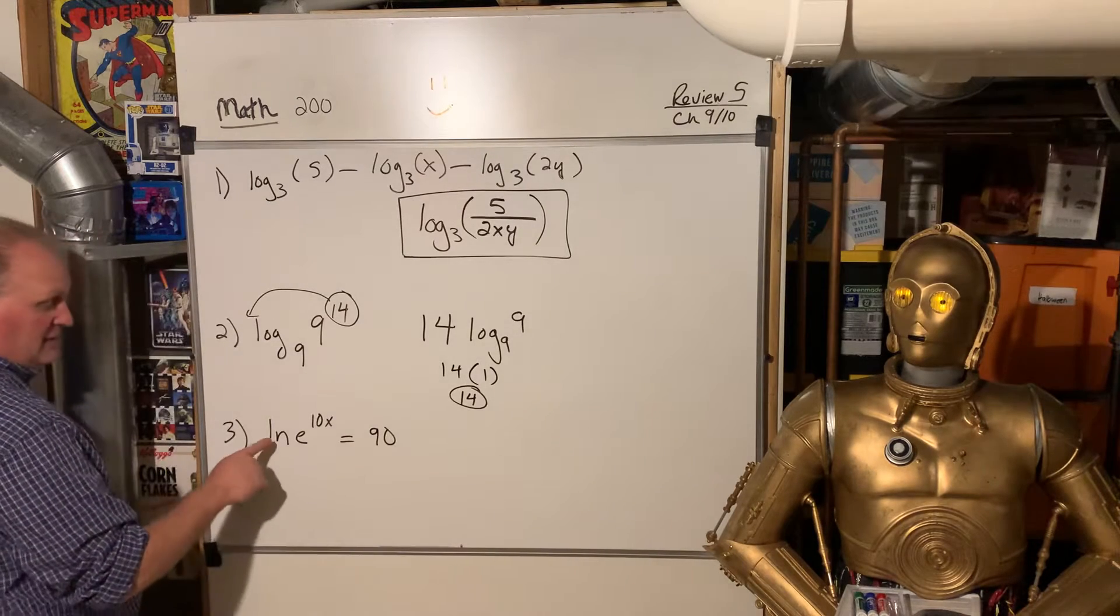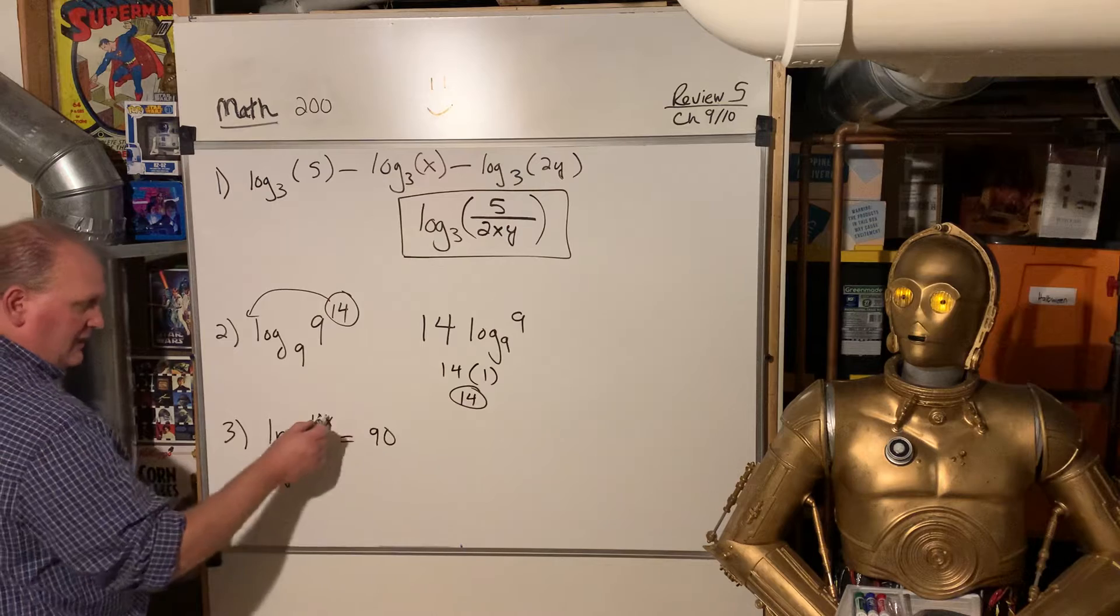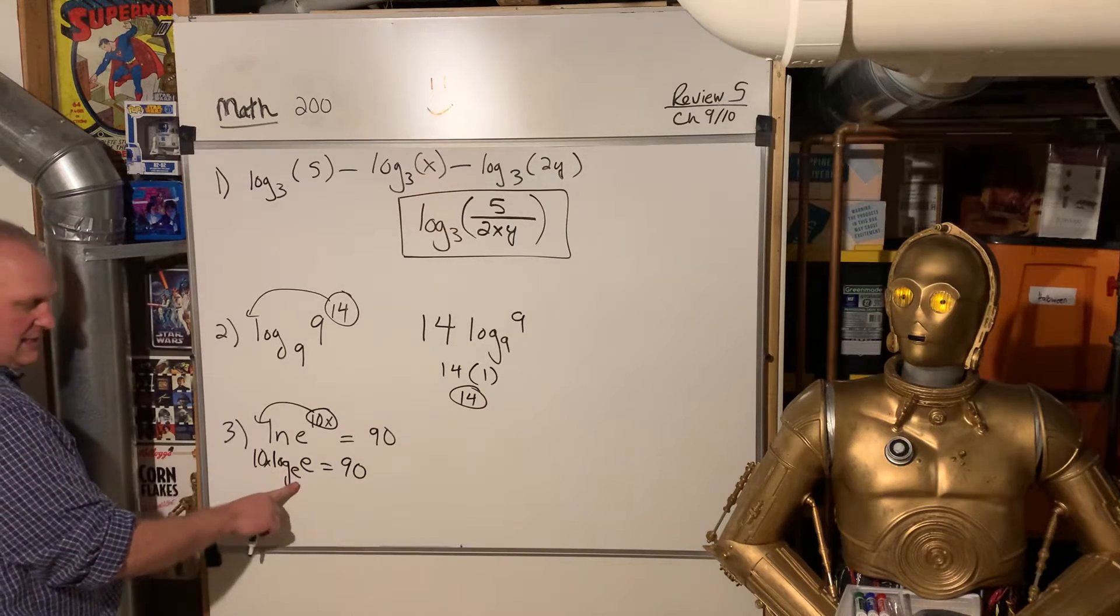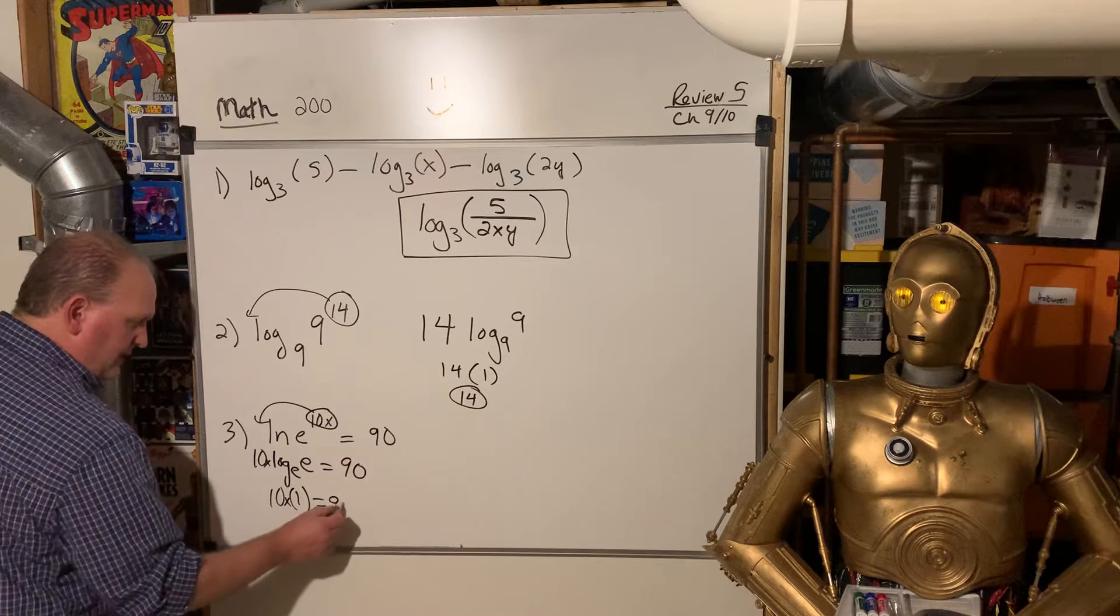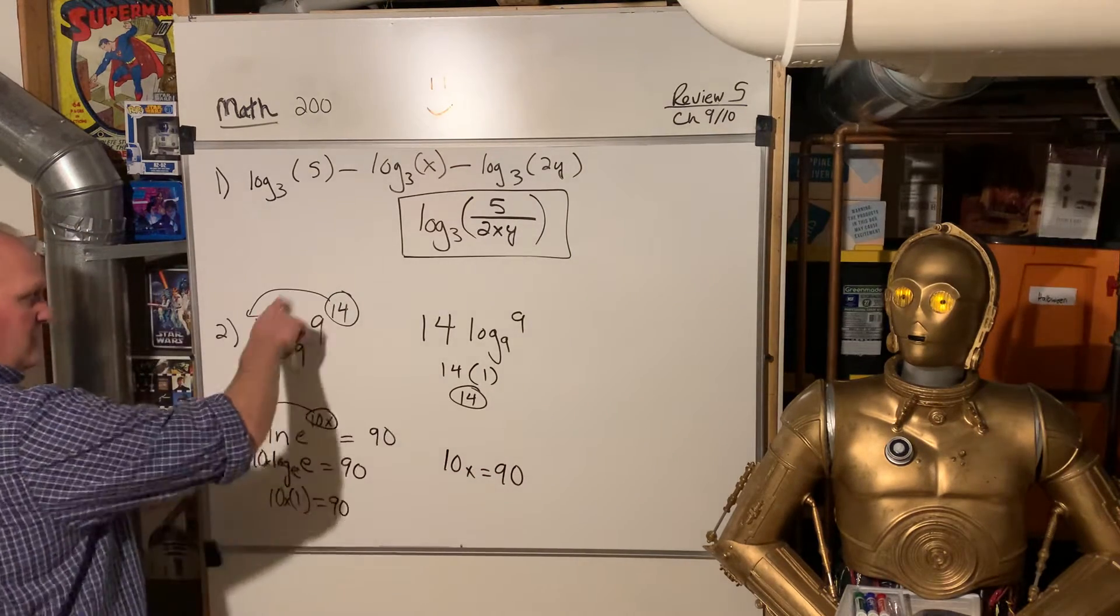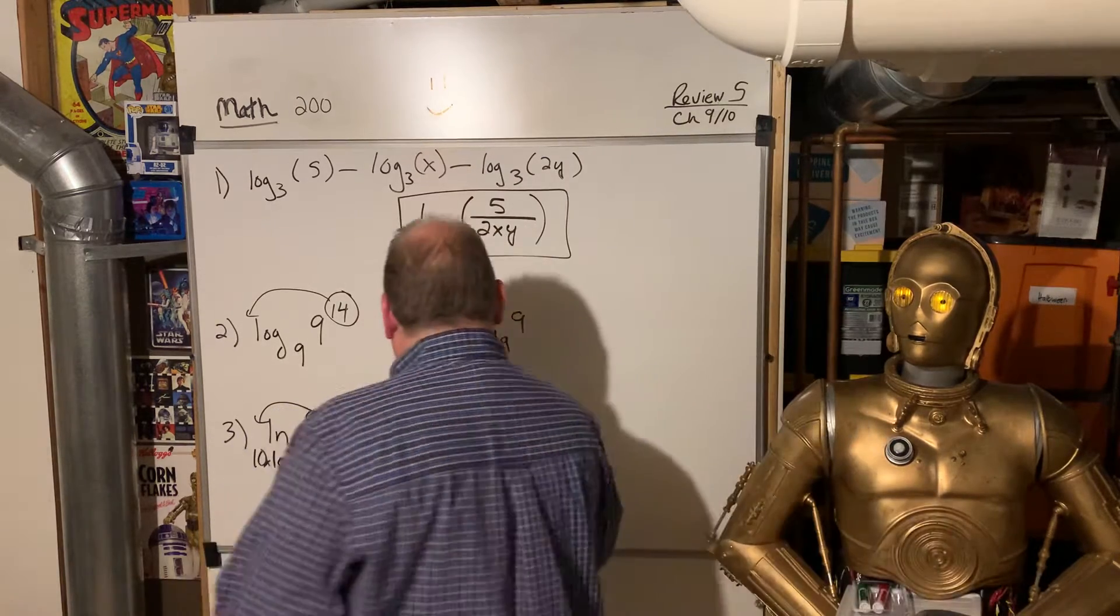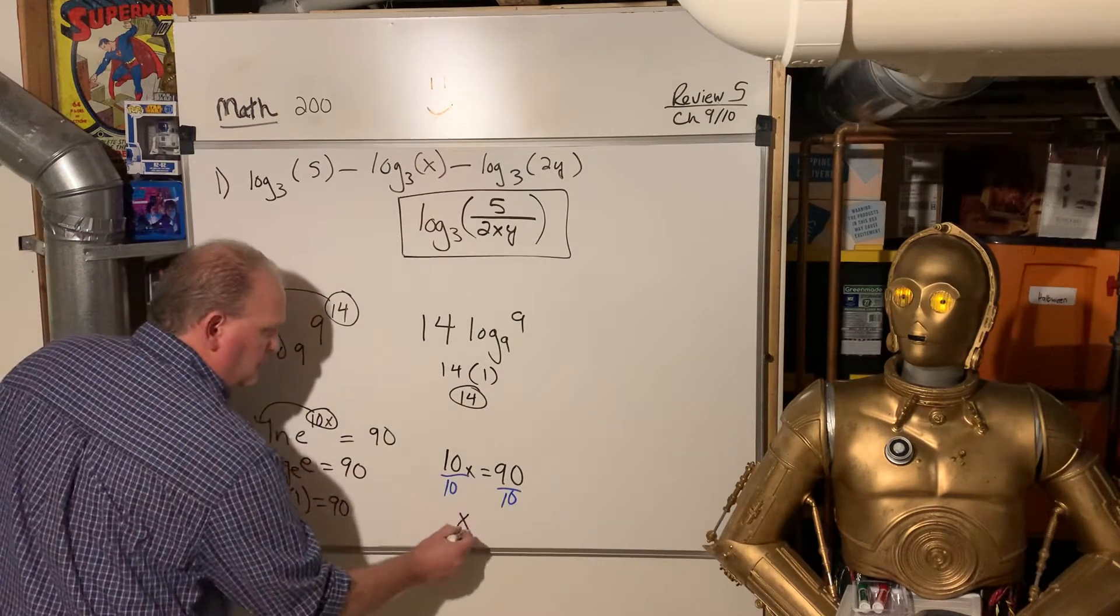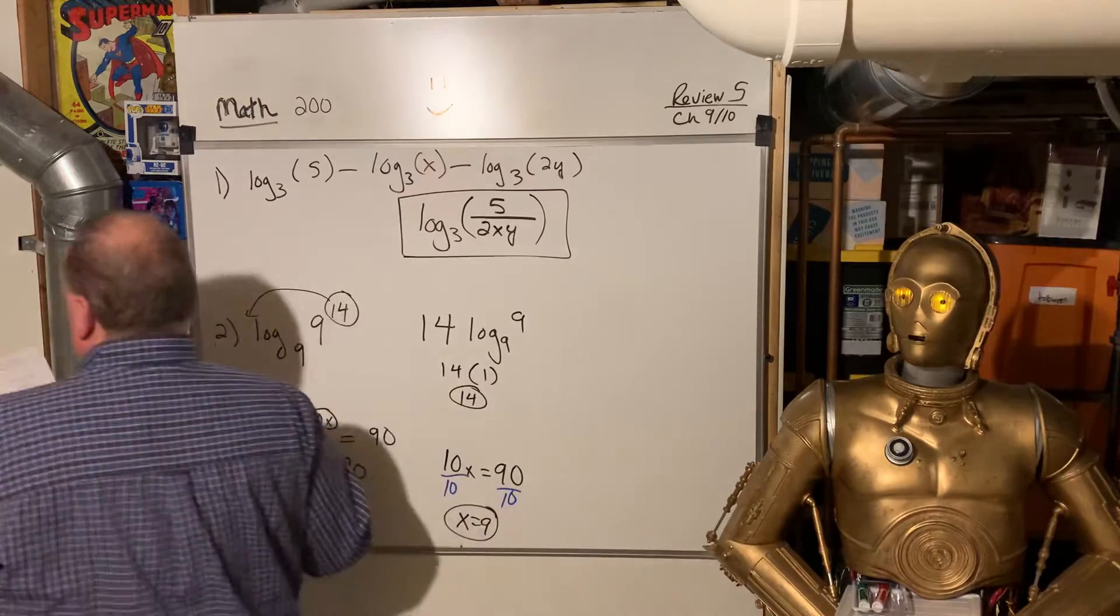This one is actually very similar, because ln is shorthand for log base E of E to the 10x. So 10x come on down. It's basically asking E to what power gives you E? Well that's 1 again. So we have 1 times 10x equals 90. That's 10x equals 90. Now we have to do a little solving. This one is just an expression, this one is an equation. So we have to actually solve 10x equals 90 and divide both sides by 10. So 1, 2, and 3 on the first page of the review.